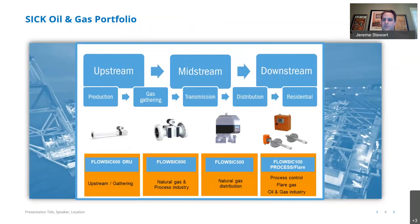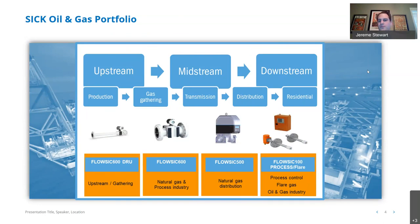Diving specifically into oil and gas, our portfolio sits in our process automation group. Reading left to right: we have upstream, midstream, and downstream sectors. Below that are the segments — production, gas gathering, transmission (your pipelines), distribution — which is our focus today — down to residential. SICK does not have a residential product; we typically stop at the city gates and the commercial and industrial customers.